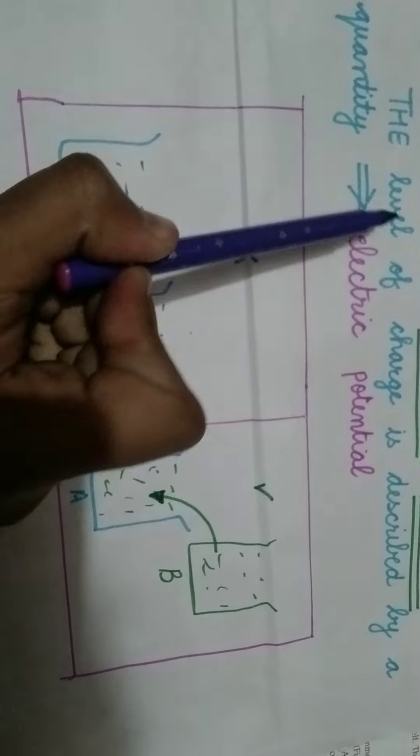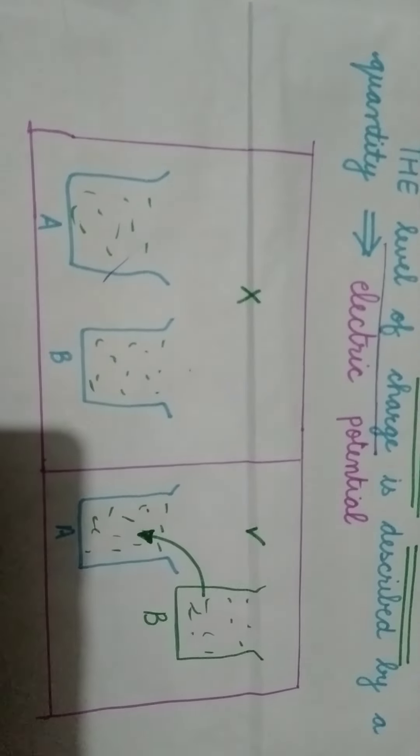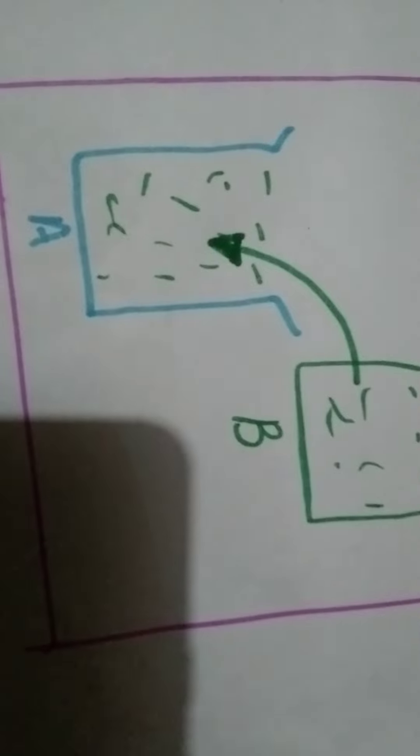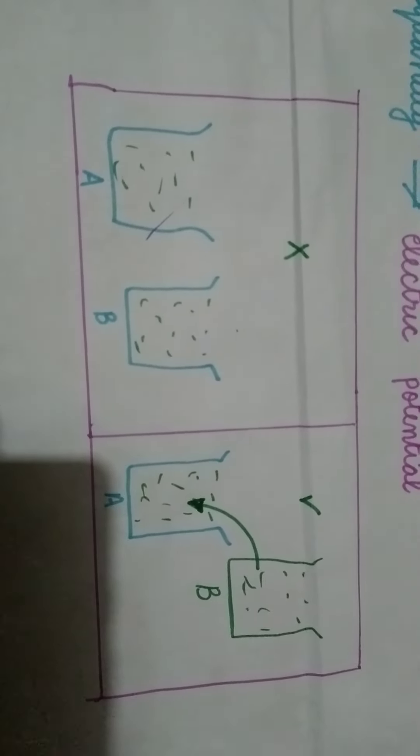Now what does this mean, level of charge described by a quantity? We'll understand this with one example. As you can see, I have two beakers here, beaker A and beaker B. This is my situation one. In situation two, I have beaker A and beaker B as I was having in the first situation.